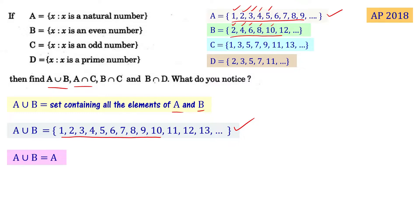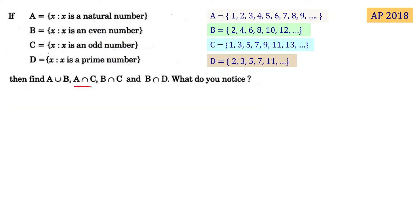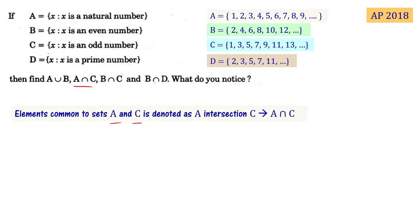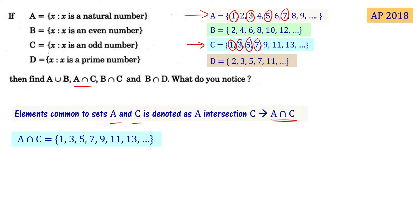B is the even numbers set and A is the natural numbers set. A union B equals the natural numbers set, since even numbers are part of natural numbers. Now let's look at A intersection C. The common elements of A (natural numbers) and C (odd numbers) are all odd numbers: 1, 3, 5, 7, 9, 11, 13, and so on. So A intersection C equals C.